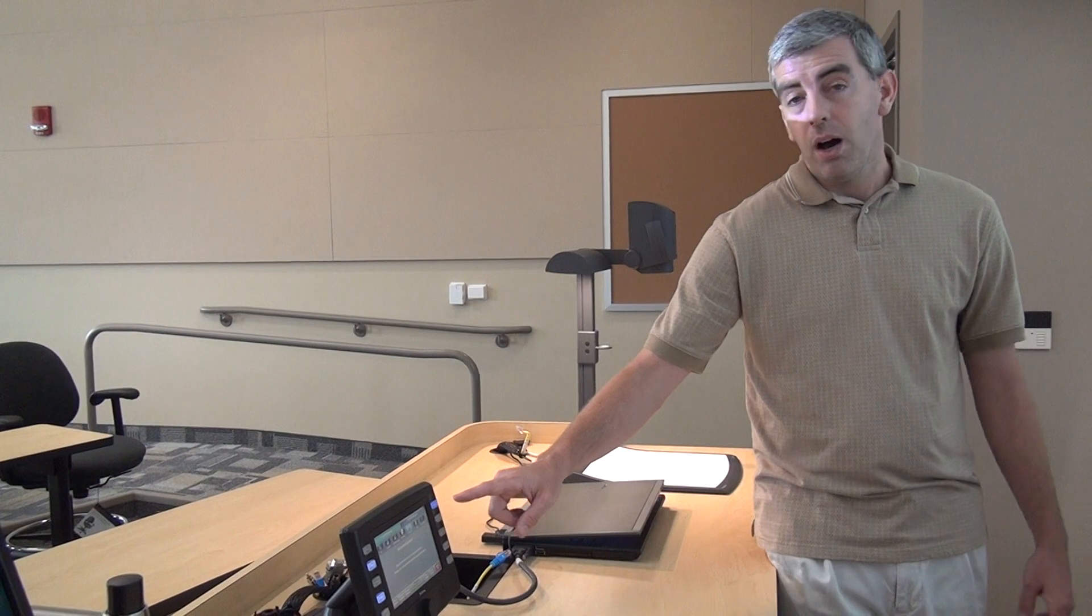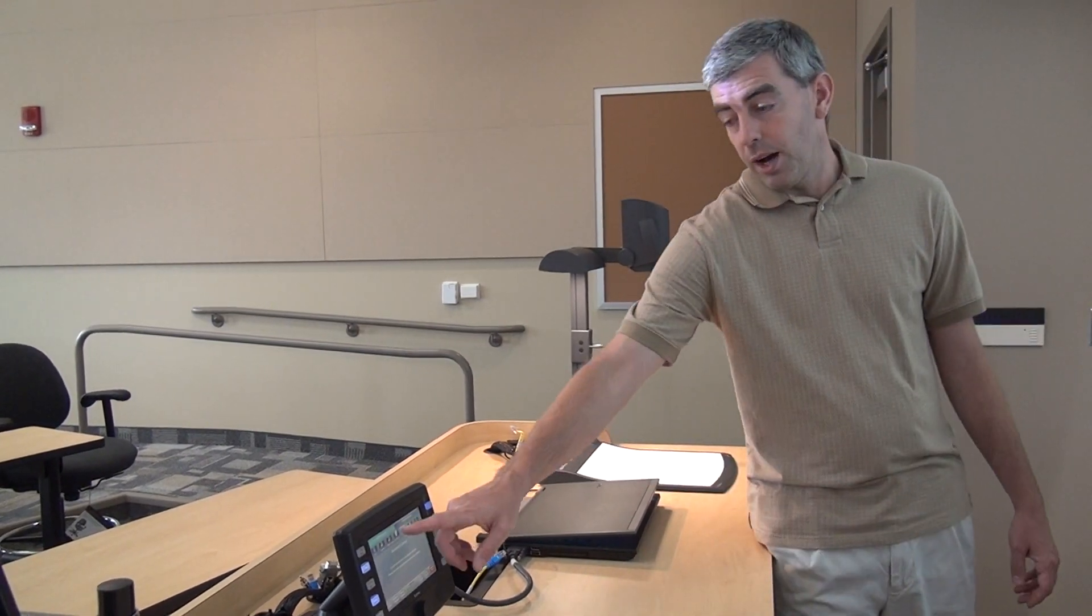When the document camera is ready I hit the document camera button on the touch panel and then the document camera is going to show up on the left projector. So now once again we have left projector, I have the document camera so anything I do on there it's going to show up, and the right projector still has the PC because we haven't touched the right projector tab to change what's on the right projector.